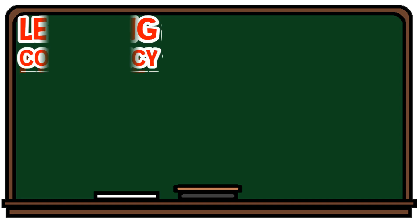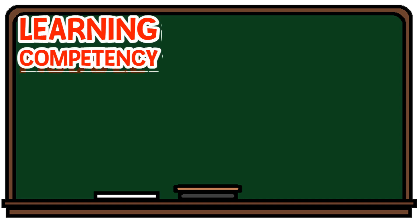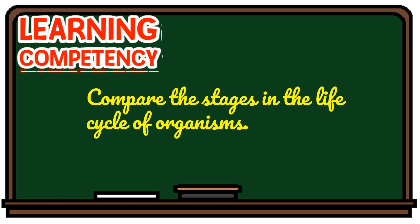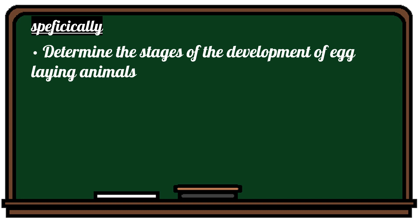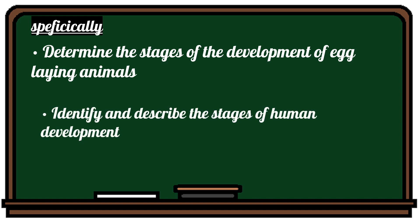The Learning Competency for Module 11: you will compare the stages in the life cycle of organisms. Specifically, determine the stages of the development of egg-laying animals. Identify and describe the stages of human development.